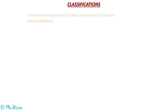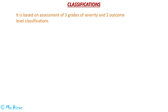The classification of acute kidney injury includes assessment of three grades of severity and two outcome levels. The classification system of acute kidney injury is called the RIFLE system of classification, and there are five stages in this classification.